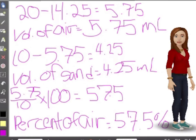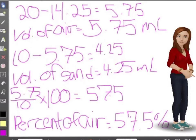To find the volume of air, you would subtract the actual volume from the volume that would be if there were no airspace. So 20 minus 14.25 equals 5.75. The volume of air would then be 5.75 milliliters.